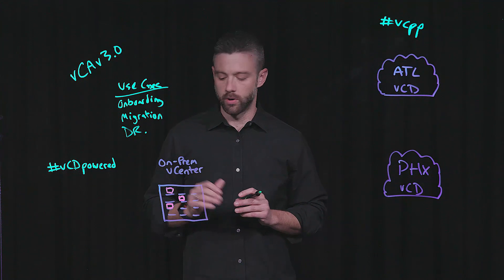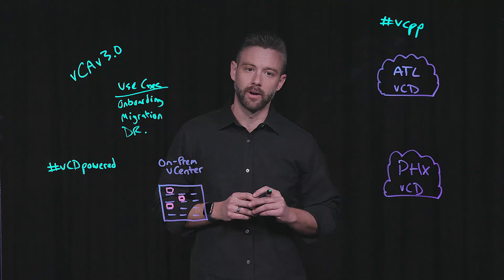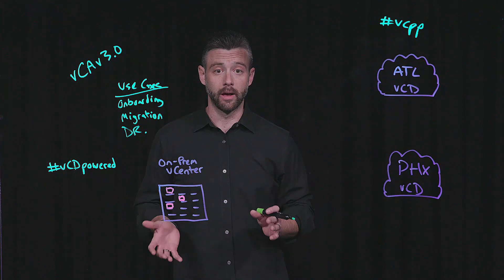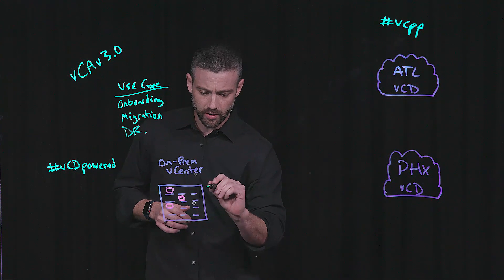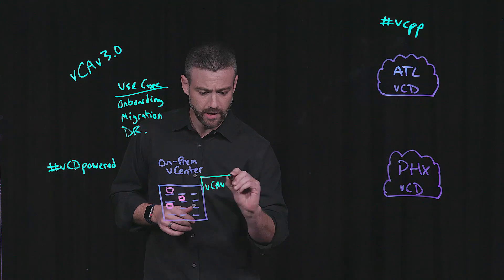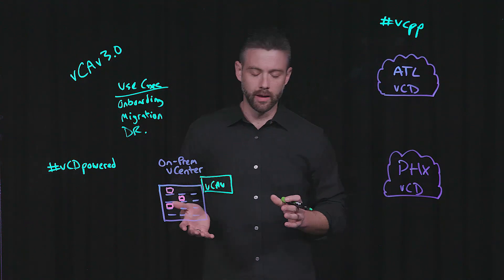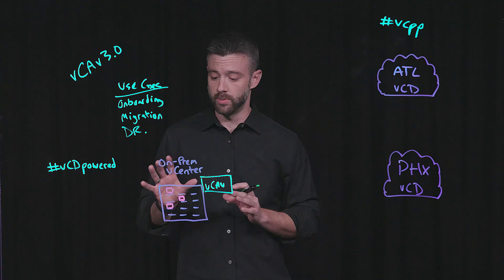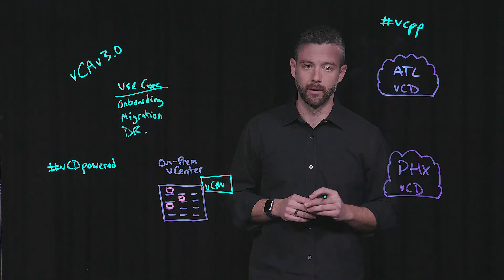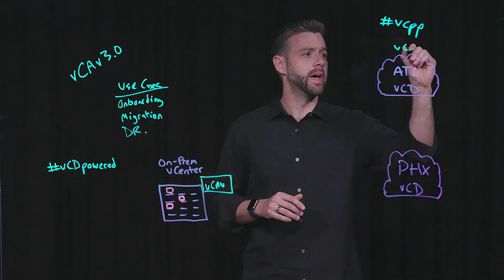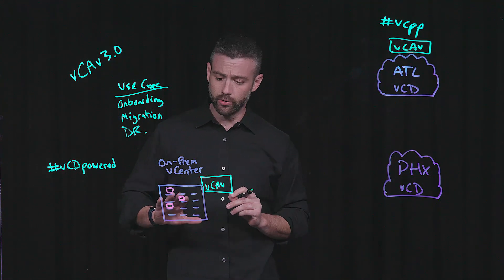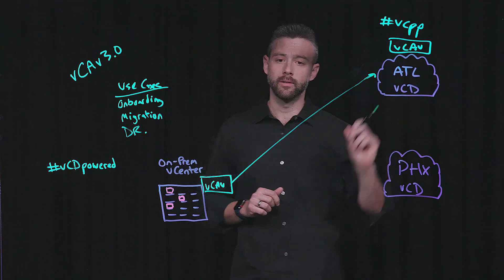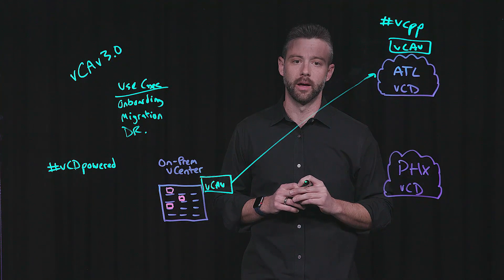If I have an on-prem vCenter from a customer running a couple of virtual machines, and I have my vCloud environments — maybe between Atlanta and Phoenix — how can I actually integrate vCloud Availability 3.0 and perform each of these use cases? It starts off with a single unified appliance. vCloud Availability 3.0 is a single OVA that deploys each of the different services or roles needed to operate between an on-prem and a provider environment. From there, we go through a workflow that integrates into the customer's on-prem vCenter and securely connects to the vCloud environment and the corresponding vCloud Availability 3.0 appliance.